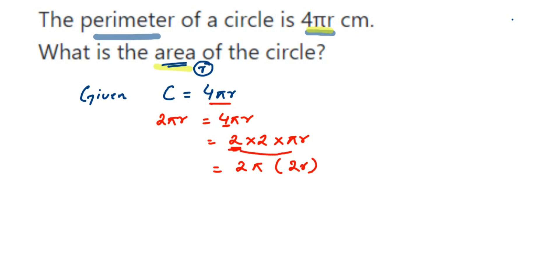This extra 2 I'm clubbing with this r. 2π and then 2r. Now why I have clubbed, I'll tell you. Now if you compare them, so 2πr is actually circumference of circle. Now if you compare them, we have 2π, we have 2π. Now if you look at the radius, now radius is nothing but your 2r.